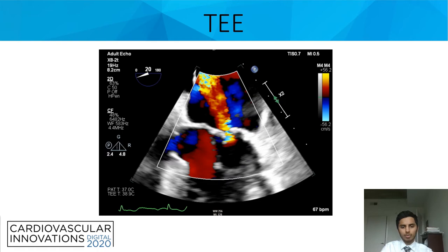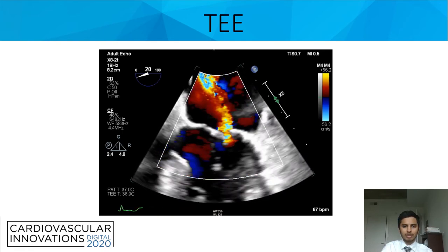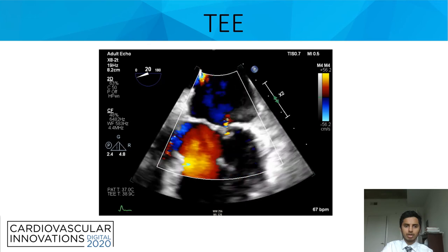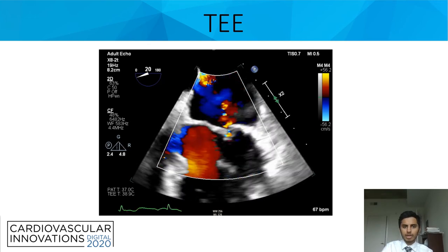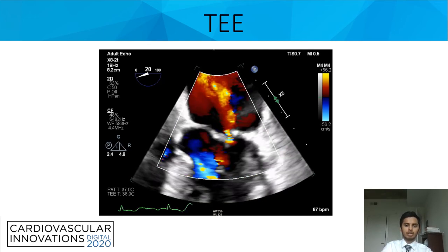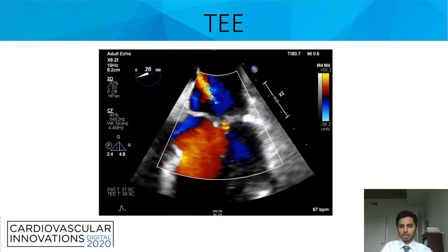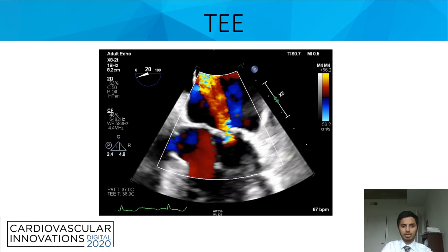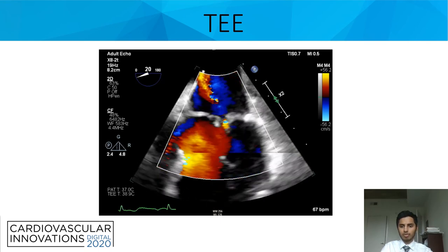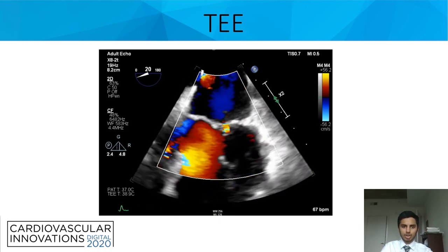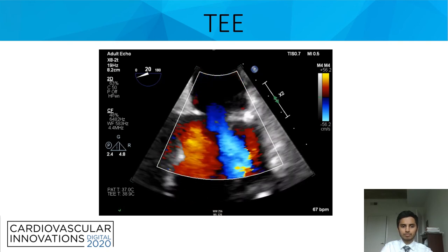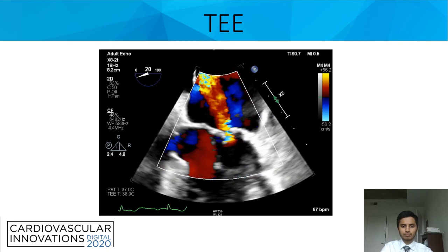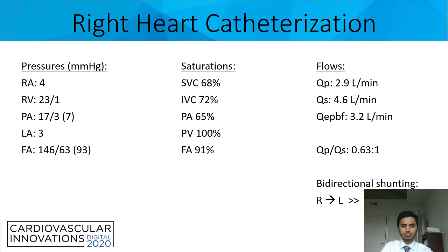Now we can see the mitral valve leaflets thickened, with associated moderate mitral regurgitation, and also some aortic thickening with mild aortic insufficiency. As mentioned earlier, you see left heart involvement here because of the PFO or shunt being present.